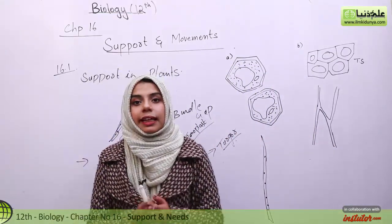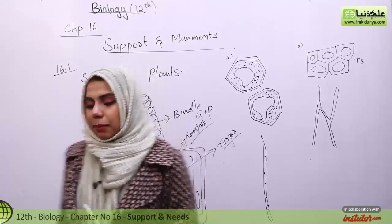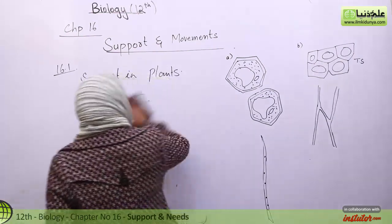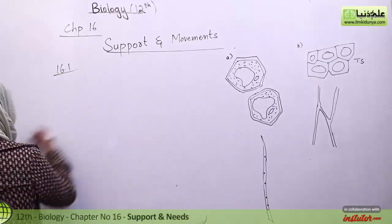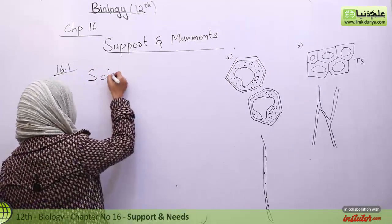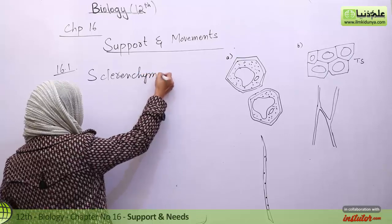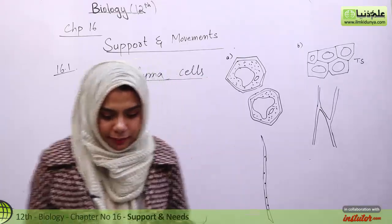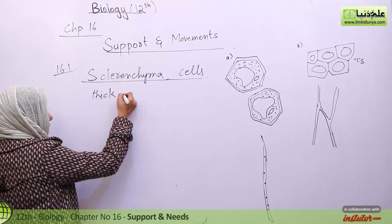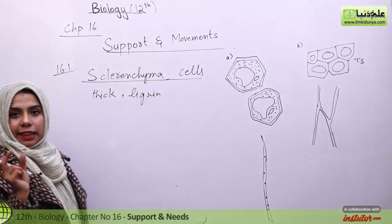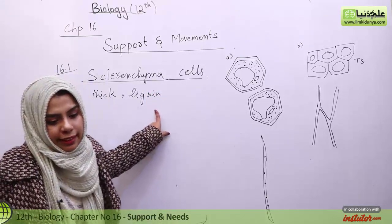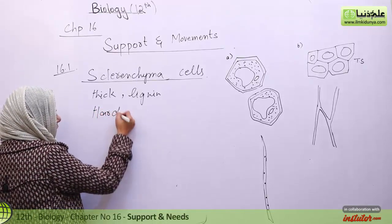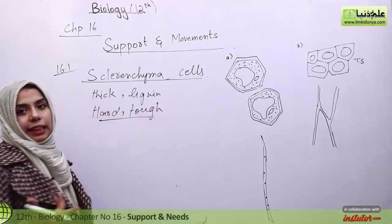There are two types of cells that give support: one is known as sclerenchyma cells and the other is collenchyma. First we look at sclerenchyma. I have also drawn some cells here on the side, which I will explain. Sclerenchyma cells are basically thick cells, and their thickness is due to lignin. Because of lignin, the cell walls are very thick, hard and tough, and this is why they provide support to the cell.